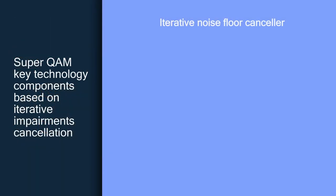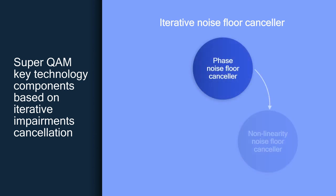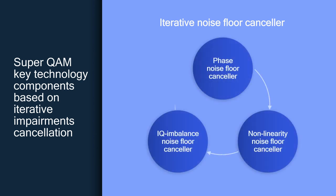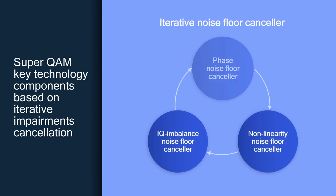Our approach is to iteratively cancel impairments, starting with the phase noise floor, then the non-linearity noise floor, followed by the IQ imbalance noise floor, and then do it all over again multiple times.